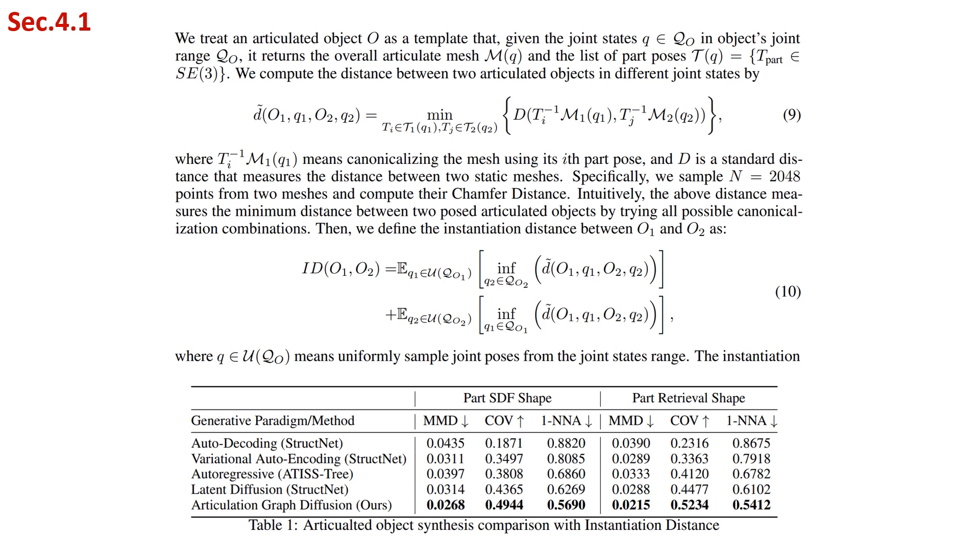We benchmarked this novel task by proposing a new distance between articulated objects, named instantiation distance, to adopt the widely used shape generation metrics, including MMD, COV, and 1-NNA to articulated object generation. More details can be found in section 4.1.